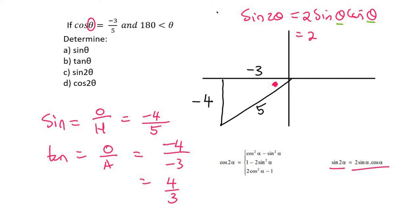I can say that this is equal to 2, and then sin theta we already worked out as negative 4 over 5, and then cos theta we already worked out as negative 3 over 5. You can just type all of this in the calculator and get a final answer of 24 over 25.